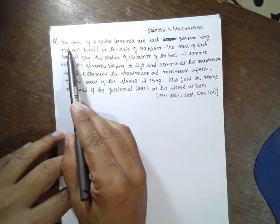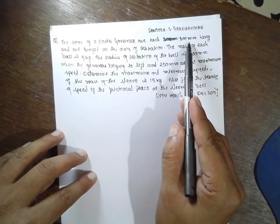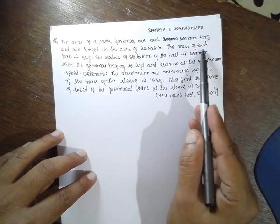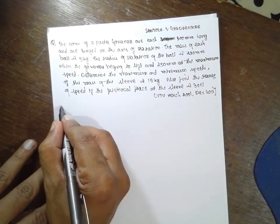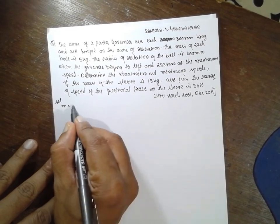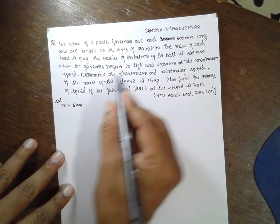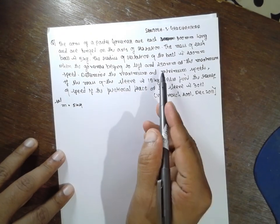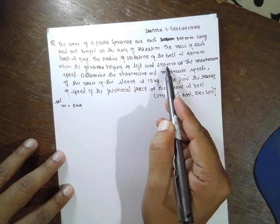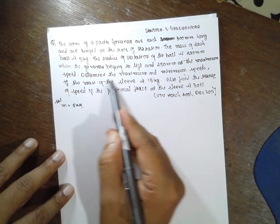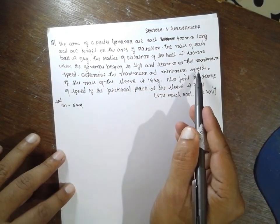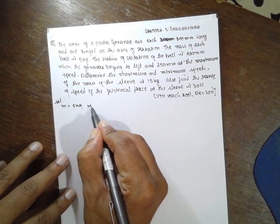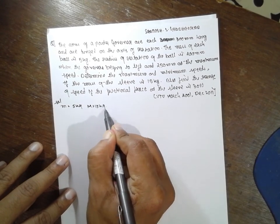The arms of the Porter Governor are each 300 mm long and have a hinge on the axis of rotation. The mass of each ball is 5 kg. The radius of rotation of the ball is 200 mm when the governor is being lifted.